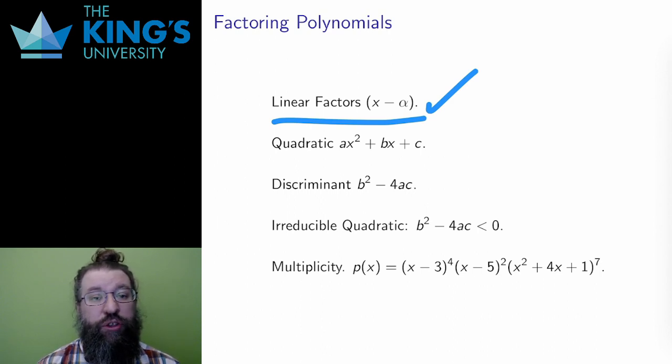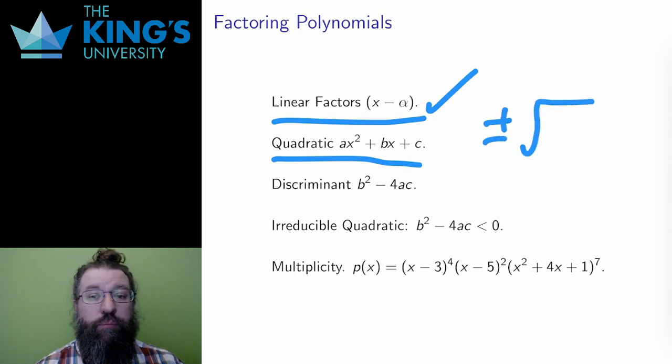Other than linear factors, there can also be quadratic factors, ax squared plus bx plus c. Whether a quadratic factor breaks down into two linear factors depends on whether or not it has roots, and whether it has roots can be determined by the quadratic formula. In the quadratic formula, there is a square root term. And inside the square root term is the expression b squared minus 4ac.